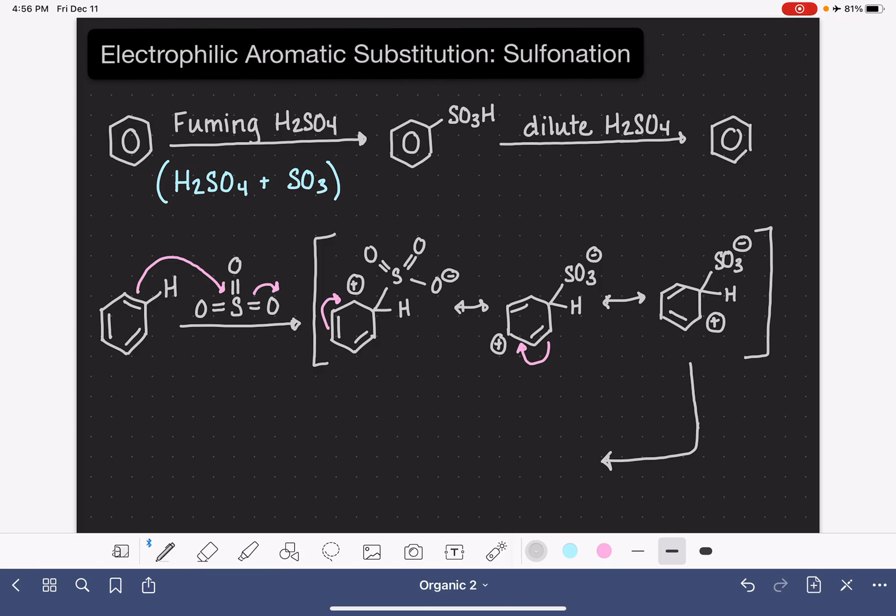In this reaction, the base that is used is a deprotonated sulfuric acid molecule, HSO4 minus. It's going to grab that hydrogen, move the carbon hydrogen electrons down to restore aromaticity to the ring. That's going to give us this structure right here.